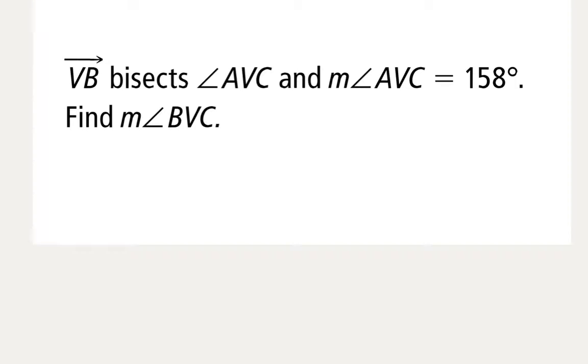Alright, so what are we trying to do here? We're trying to find the measure of angle BVC. I'm told that ray VB bisects angle AVC and the measure of angle AVC equals 158 degrees, and I should be able to use that information to find the measure of angle BVC.